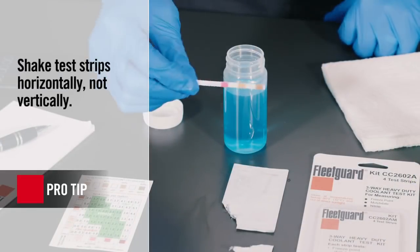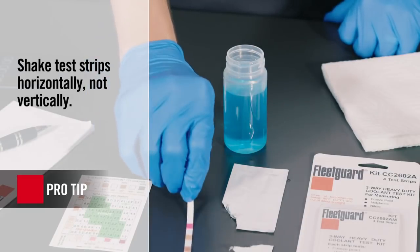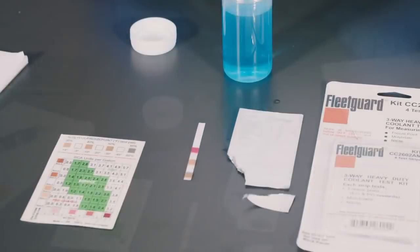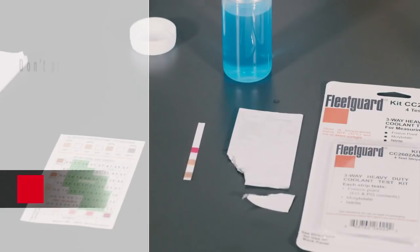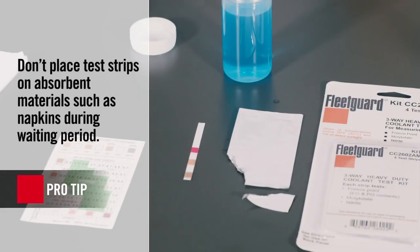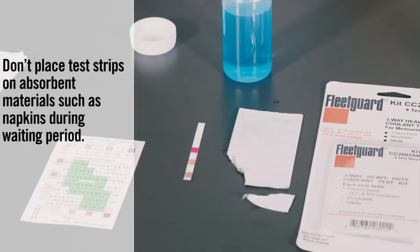After three seconds hold the test strip horizontally and shake it up and down to remove any excess coolant. Once you've done this place the test strip down on a flat non-porous surface like a table or countertop with the test pads facing up.